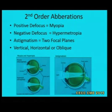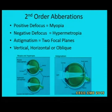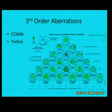Second order aberrations we all know quite well: positive defocus is myopia and negative defocus is hypermetropia. Astigmatism, having two focal planes, needs no detailed elaboration.